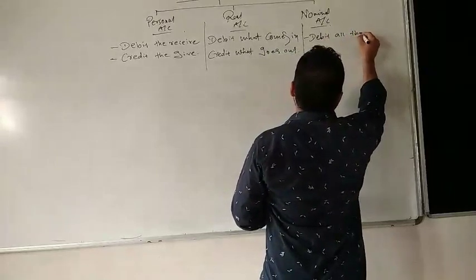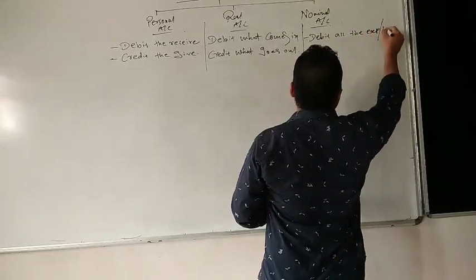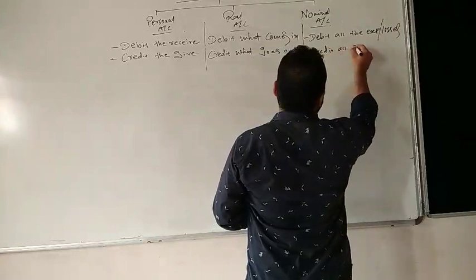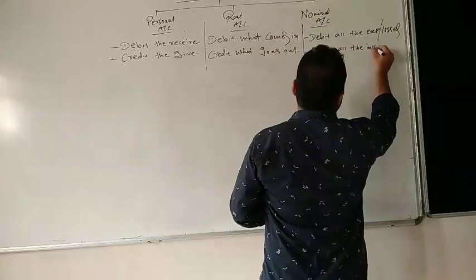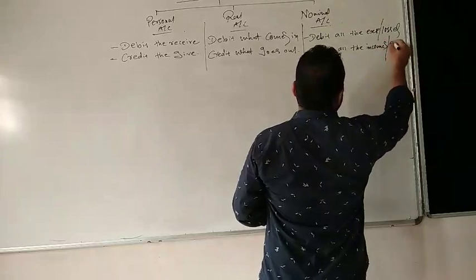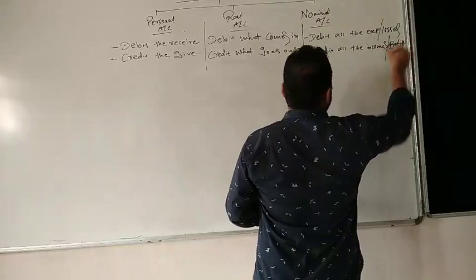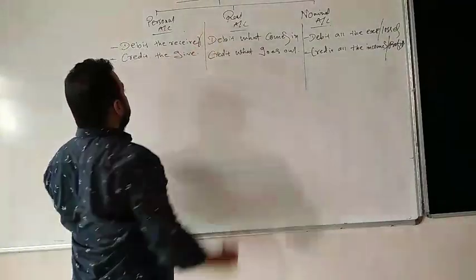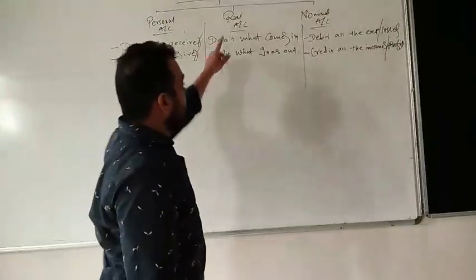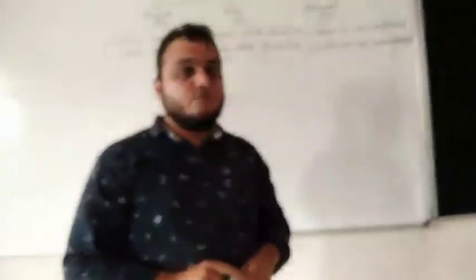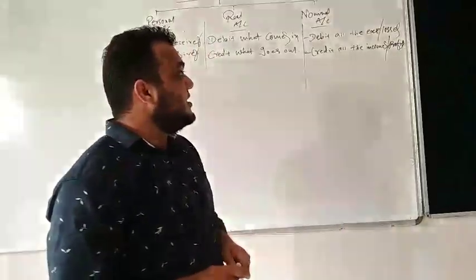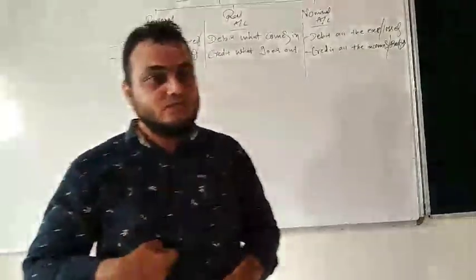For Nominal Account, the rules are: debit all the expenses as well as losses, and credit all the incomes as well as profits. So in summary: Personal Account — debit the receiver, credit the giver; Real Account — debit what comes in, credit what goes out; Nominal Account — debit all expenses and losses, credit all income and profits.